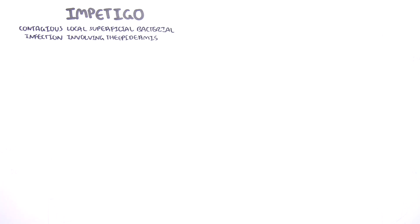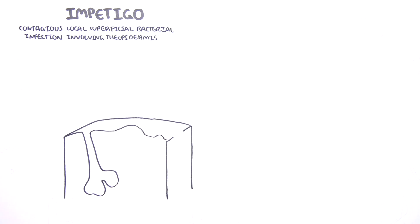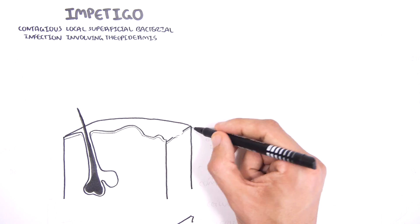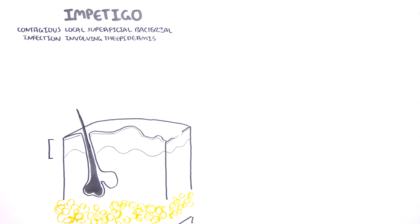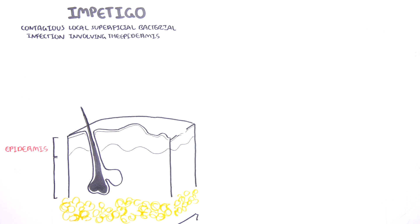Let us now recap the anatomy of the skin to understand impetigo in general. The skin has two main layers: the epidermis on top and the dermis under it.